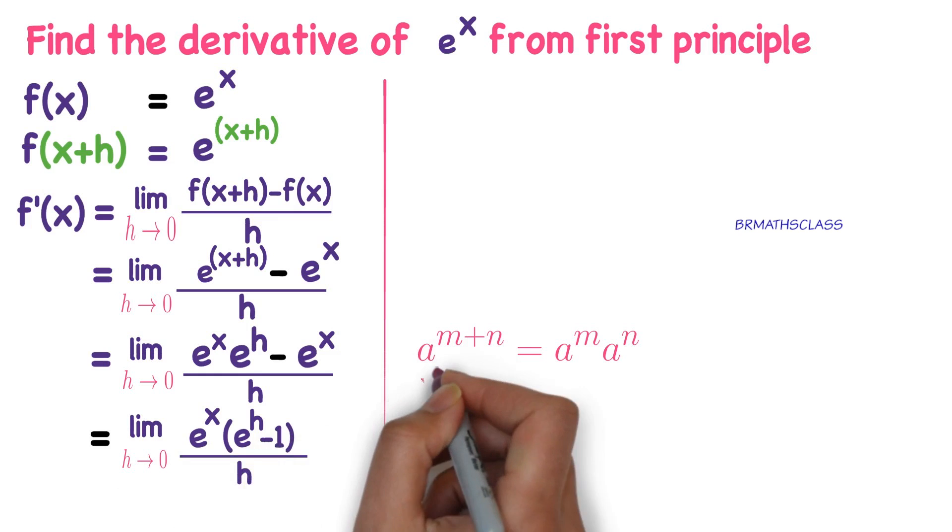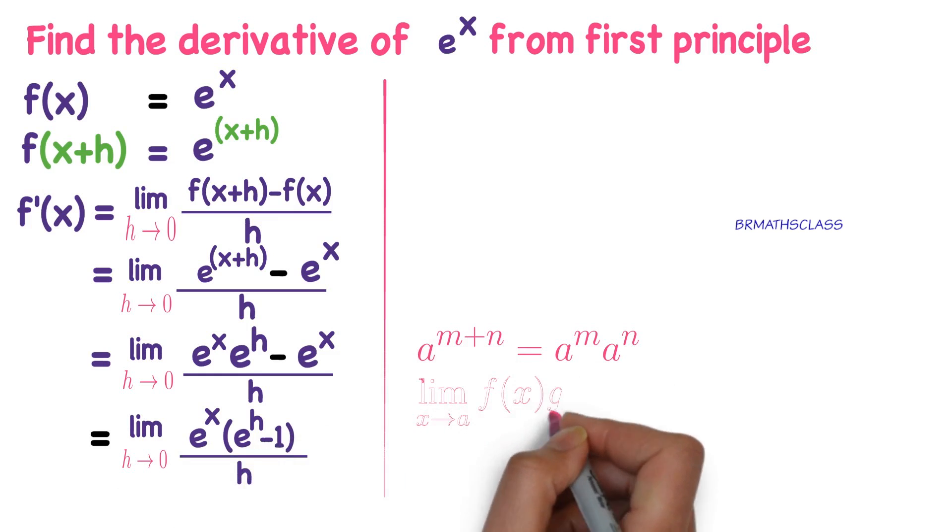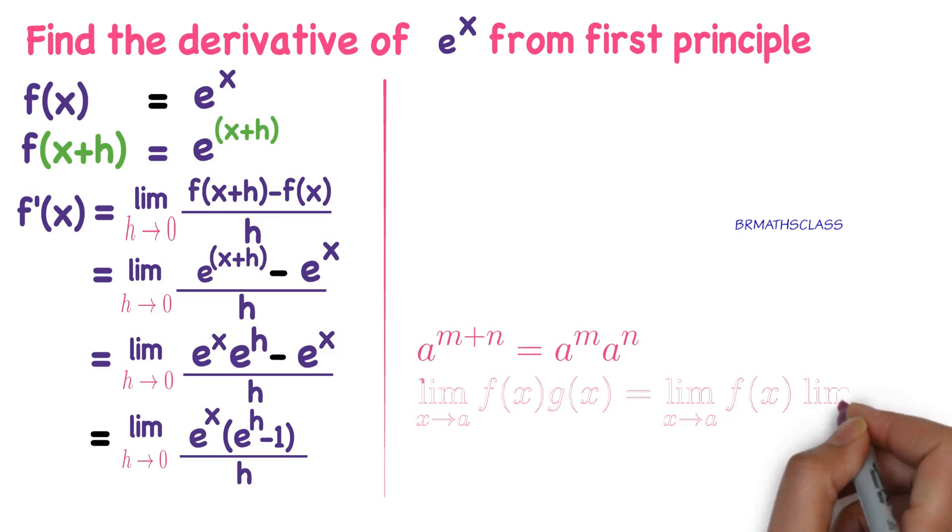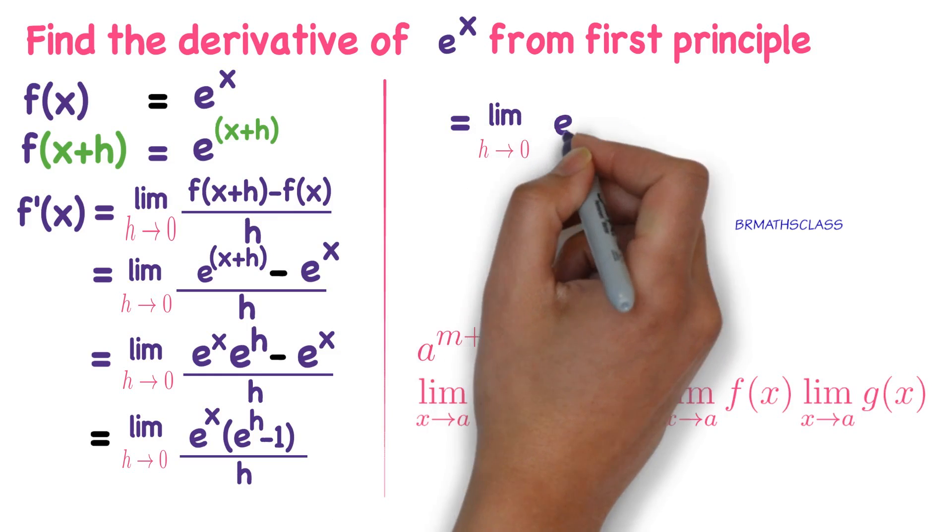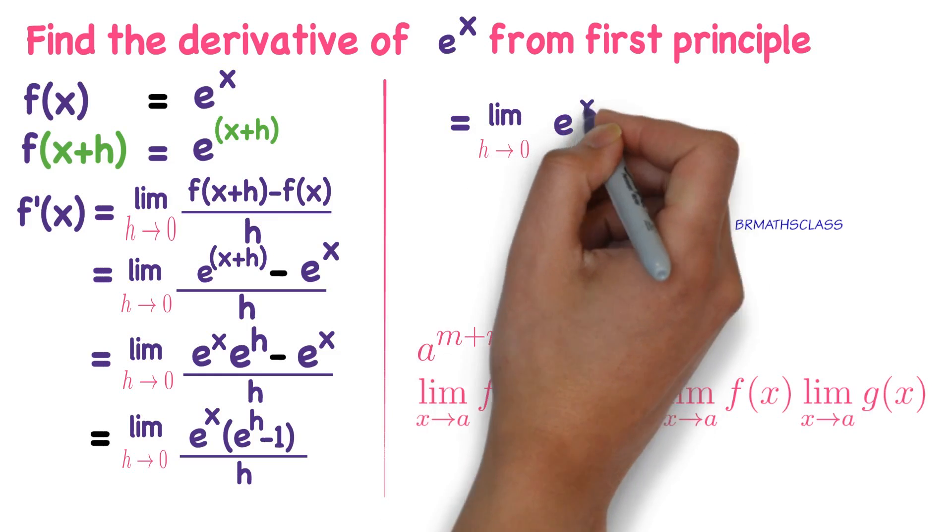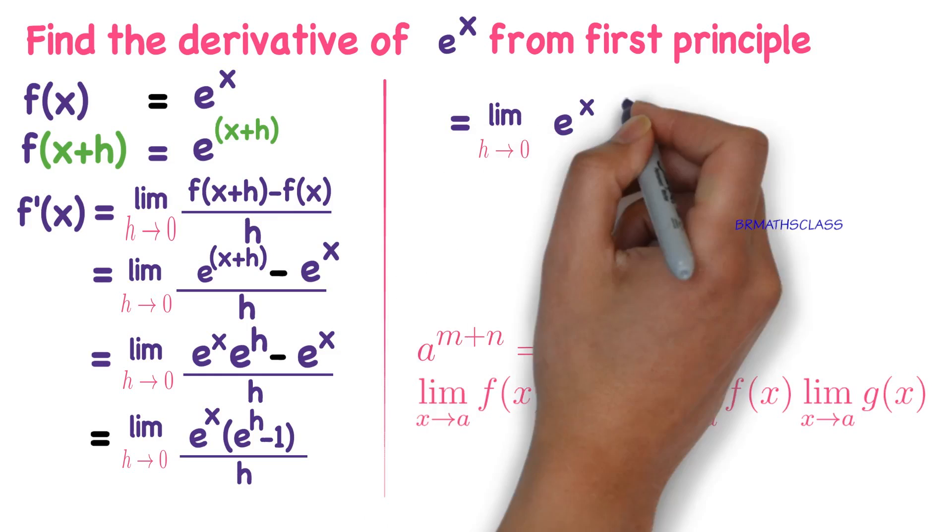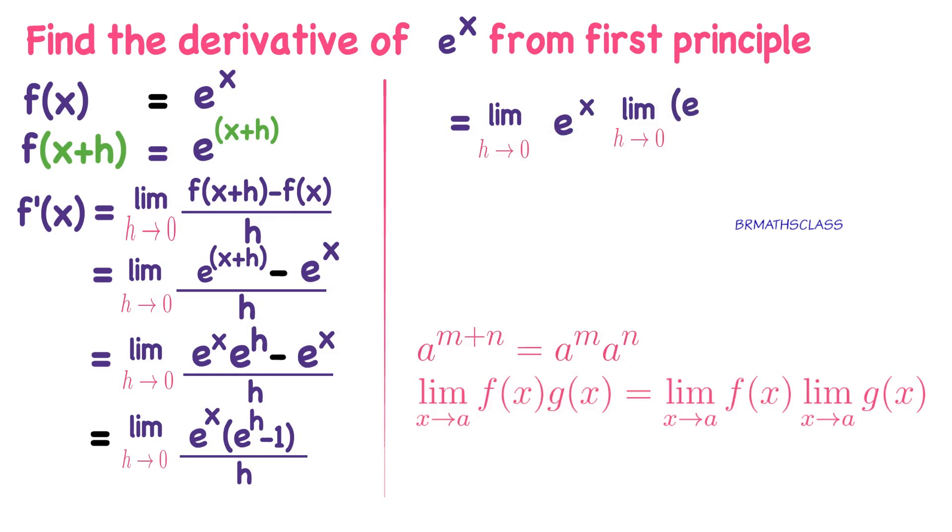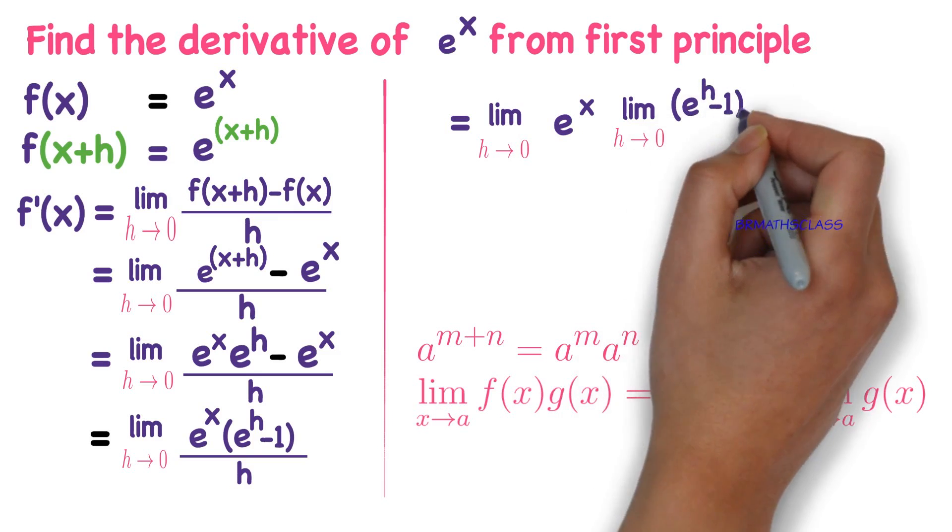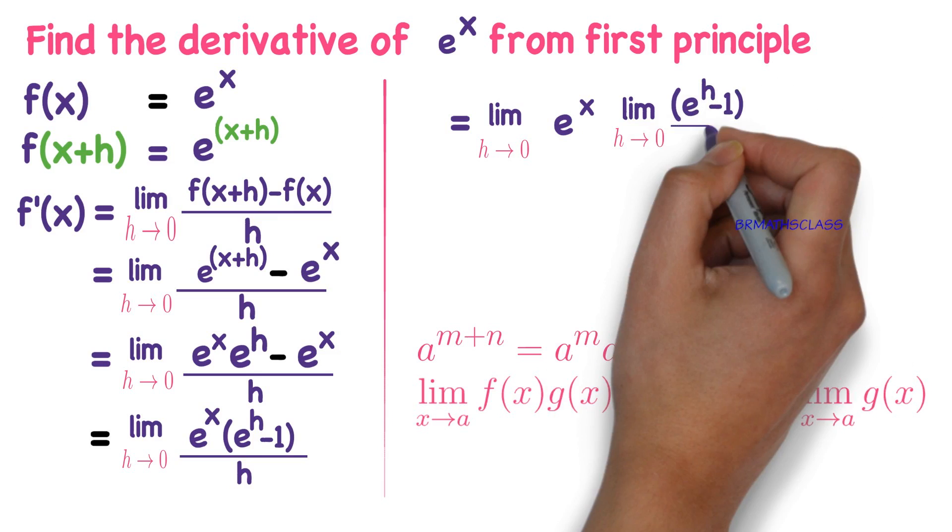See, we have a formula: limit x tends to a of f(x) times g(x) equals limit x tends to a of f(x) times limit x tends to a of g(x). You apply the same formula to the last step. Limit h tends to 0 of e^x times limit h tends to 0 of (e^h - 1) whole divided by h.